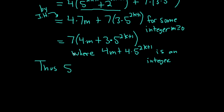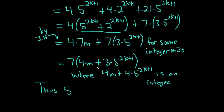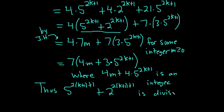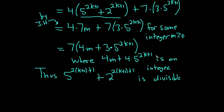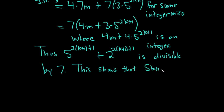Thus, 5 to the 2k plus 1 plus 1, plus 2 to the 2k plus 1 plus 1, is divisible by 7. Because it's a multiple of 7, it is divisible by 7. So what we've essentially shown is that S sub k plus 1 is true — our statement is true when n equals k plus 1.